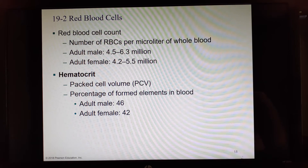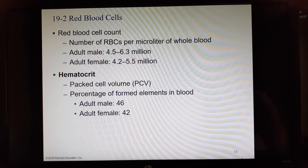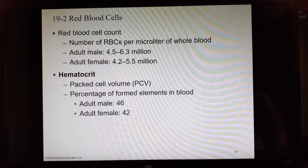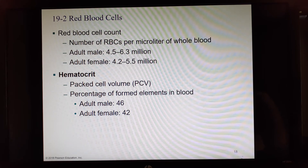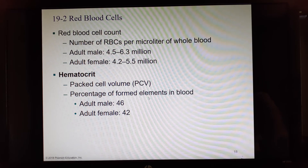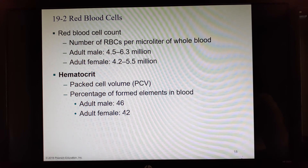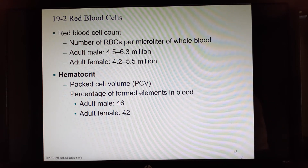In just one drop of blood — five microliters — you would have somewhere between 27 and 32 million red blood cells. Hematocrit, also called packed cell volume, is the percentage of formed elements in blood, usually around 45% — about 46% for males and 42% for females.